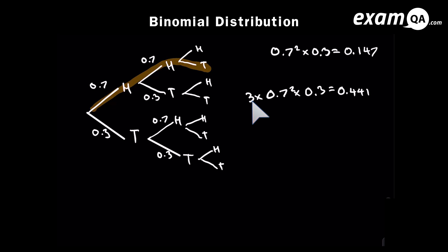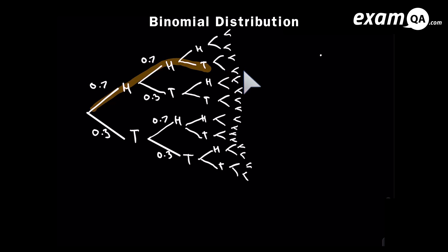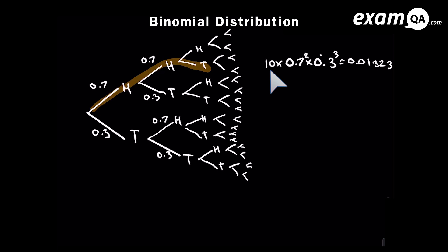Let's say we're tossing it five times. I didn't put the numbers in because the diagram got really small. Let's work out the probability of getting two heads. That's 0.7 squared times 0.3 cubed, which gives us 0.01323. But that's not the answer because there's many ways of getting two heads — there are ten ways. So we simply multiply our answer by ten. The way I got that ten was using the NCR button, where N is how many times we're tossing it (five) and R is how many successes we want.